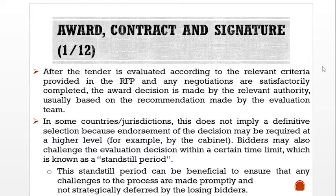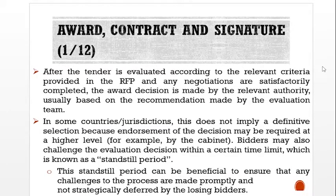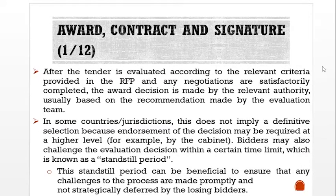Award, contract, and signature. After the tender is evaluated according to the relevant criteria provided in the RFP and any negotiations are satisfactorily completed, the award decision is made by the relevant authority, usually based on the recommendation made by the evaluation team. In some jurisdictions, this does not imply definitive selection, because endorsements of the decision may be required at a higher level — for example, by the cabinet. Bidders may also challenge the evaluation decision within a certain time limit, known as a standstill period, which helps ensure that any challenges are made promptly and not strategically deferred by the losing bidder.